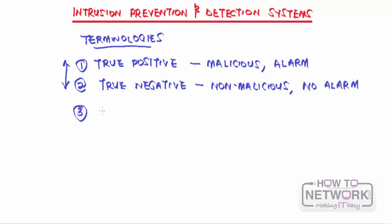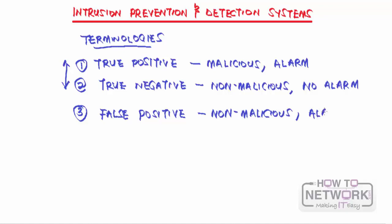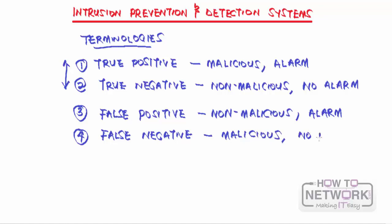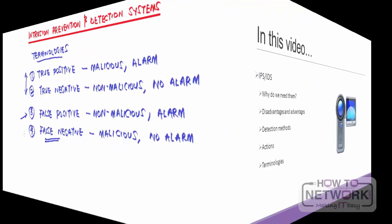The wrong actions are false positive and false negative. False positive means non-malicious traffic passed through but an alarm was generated. False negative means malicious traffic passed through and no alarm was generated — this is the worst case, because the IPS or IDS failed to detect the threat. False positive is better than false negative: it is better to deny legitimate traffic than to allow illegitimate traffic.